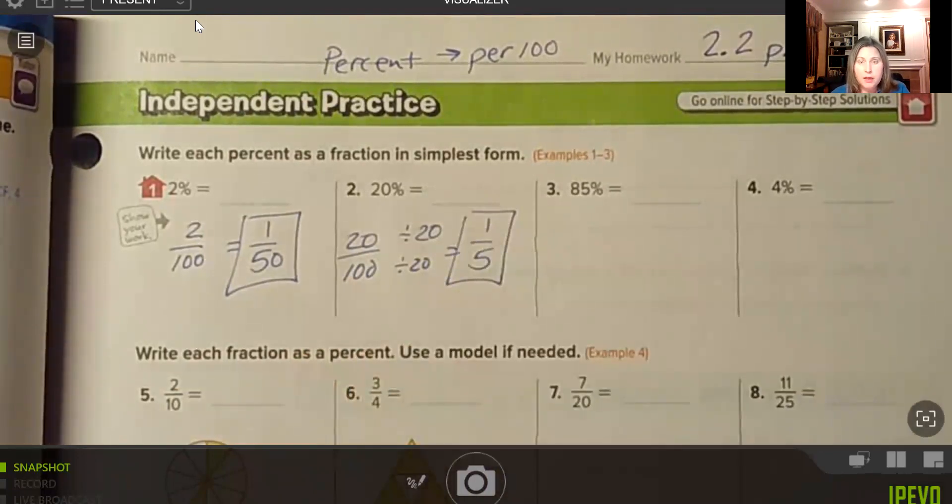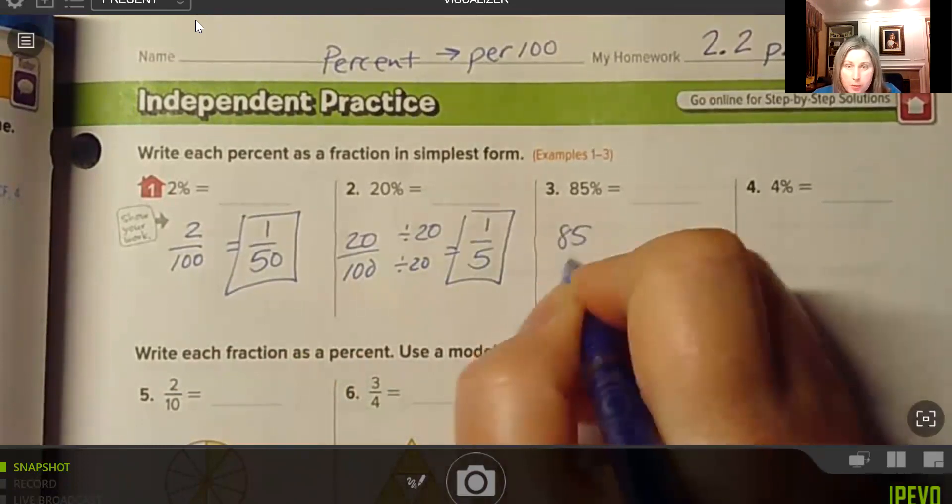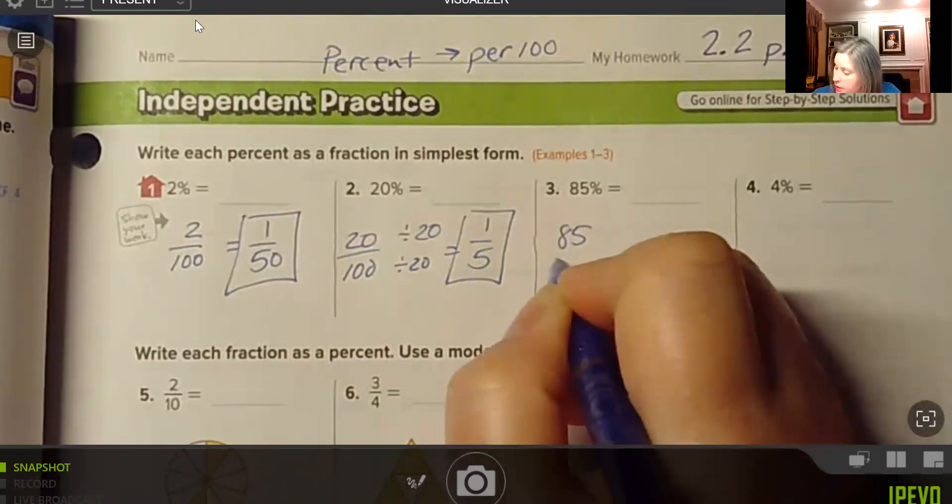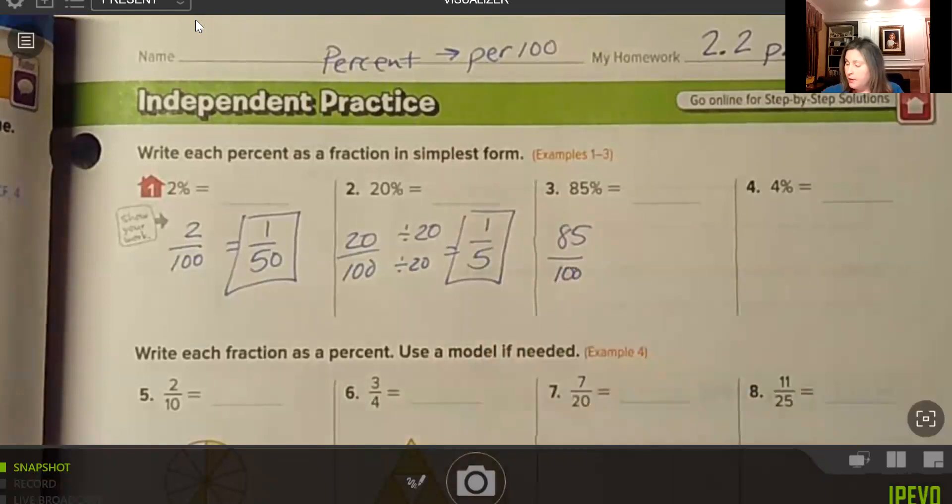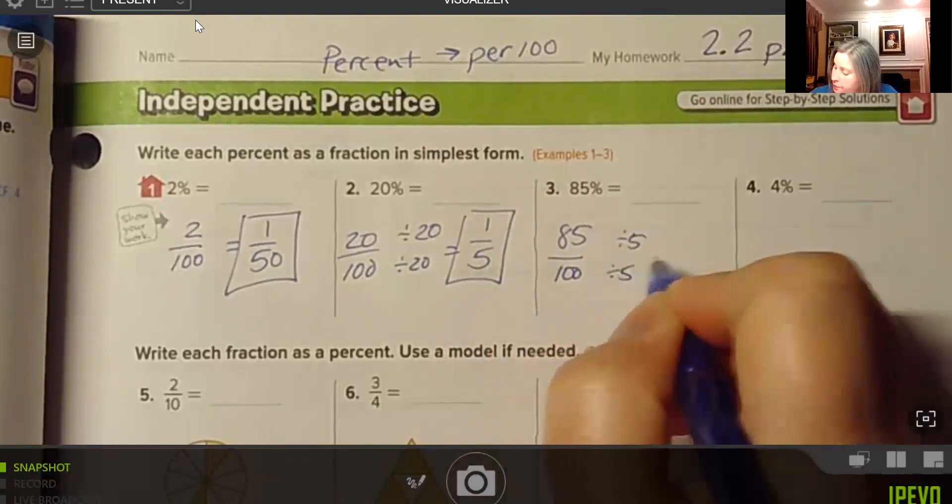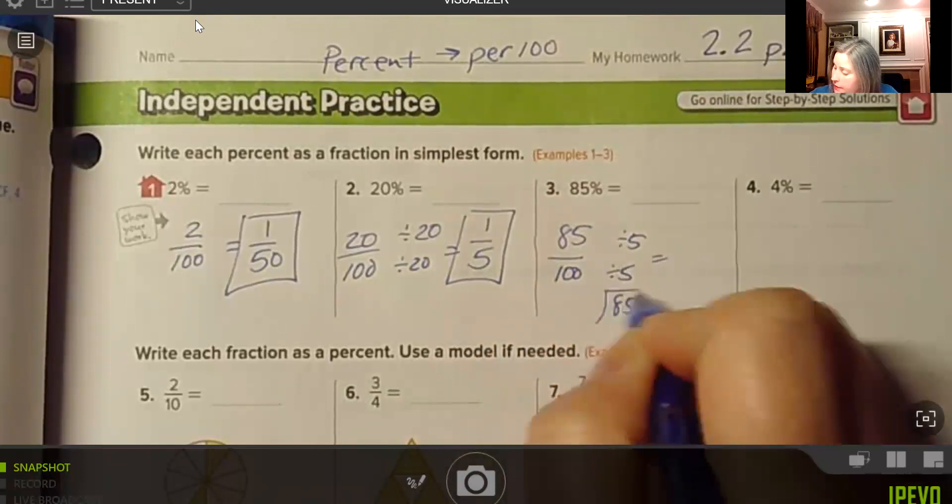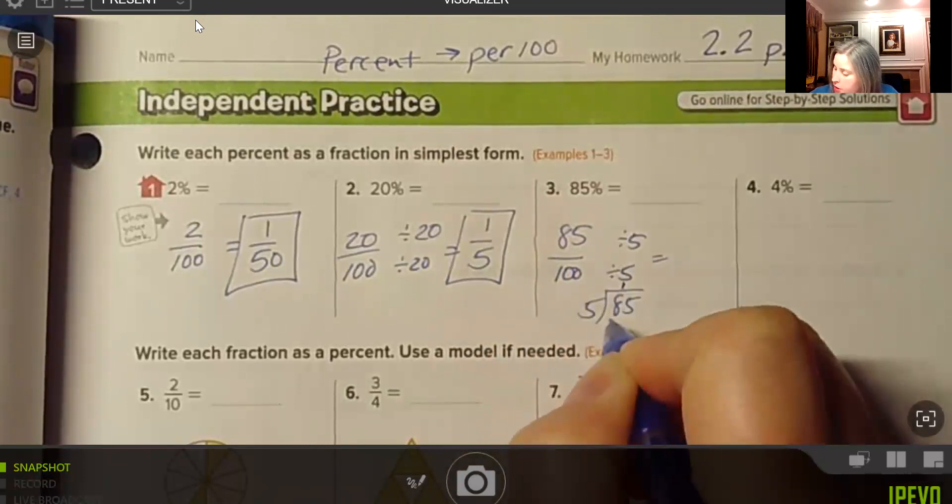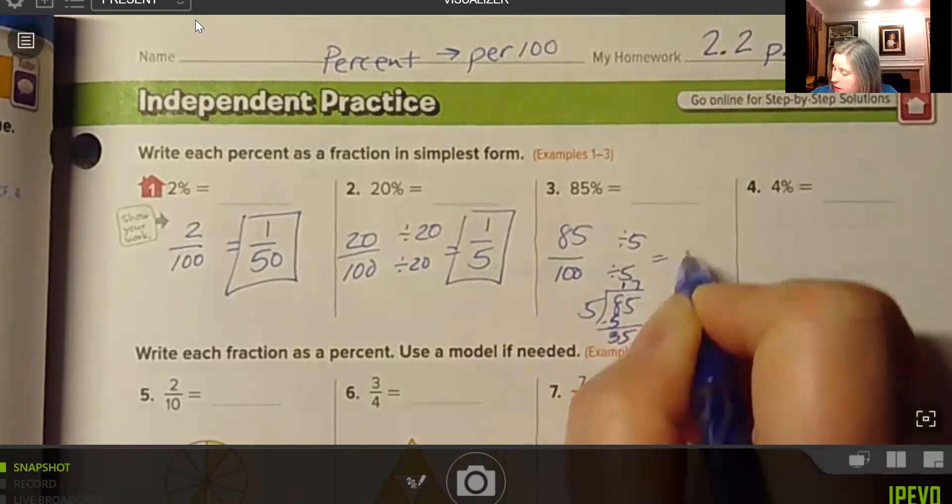Number 3, 85% means 85 per 100. These are both divisible by 5. So divide by 5, divide by 5. 85 divided by 5, we get 1, subtract the 5, 35, 7, so 17.